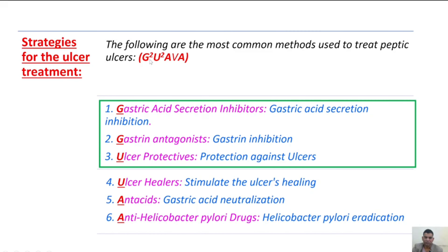In G-squared: the first G is gastric acid secretion inhibitors — these are the drugs that inhibit gastric acid secretion. The second G is gastrin antagonist — these are the drugs that inhibit gastrin. In U-squared: the first U is ulcer protectives — these are the drugs that give protection against ulcers.